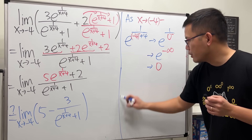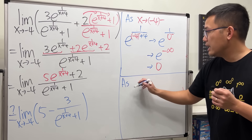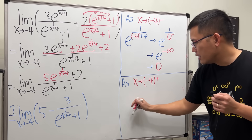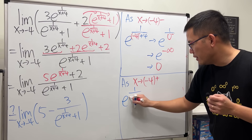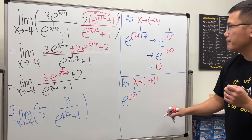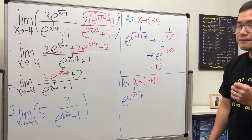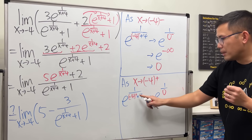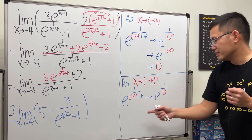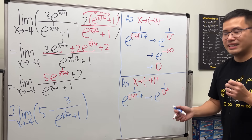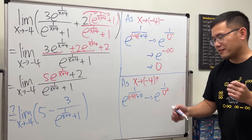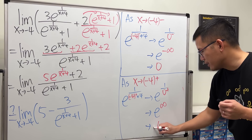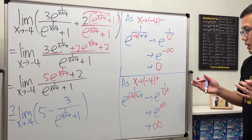For x approaching negative four from the positive direction, we do the same thing: e raised to one over negative four plus from the right, plus four. Negative four plus four is zero, but since it's a little bit bigger than negative four, adding four gives zero plus. So one over zero plus is positive infinity, and e to the positive infinity gives us infinity.